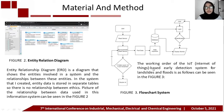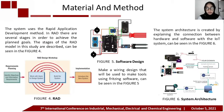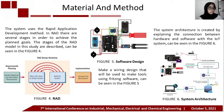Next, the working order of the IoT-based early detection system for landslide and flood can be seen in Figure 3. The system uses the Rapid Application Development method or RAD. There are several stages in order to achieve the planned goal, and the stages of the RAD model in this study are described and can be seen in Figure 4.